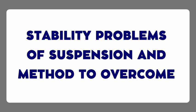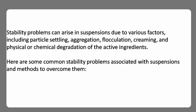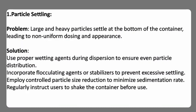Now, stability problems of suspension and methods to overcome them. Stability problems can arise due to various factors including particle settling, aggregation, flocculation, creaming, and physical or chemical degradation of the active ingredients. First, particle settling — large and heavy particles settle at the bottom of the container, leading to non-uniform dosing. Solution: use proper wetting agents during dispersion, incorporate flocculating agents or stabilizers to prevent excessive settling, employ controlled particle size reduction to minimize sedimentation rate, and instruct users to shake the container before use.